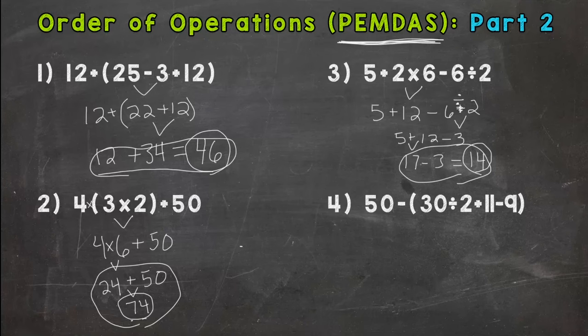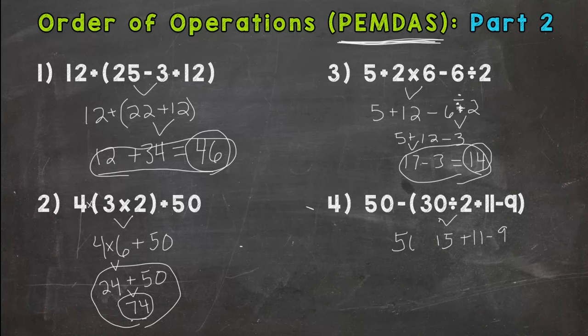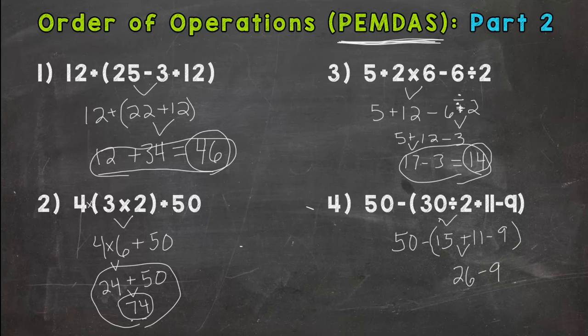Number four: any parentheses? Yes, and we have three operations within those parentheses — division, addition, subtraction. Division comes first: 30 divided by 2 is 15. Bring everything we did not use down, and since we haven't used all the operations inside the parentheses, we keep them. We have addition and subtraction — both level four, fourth priority — so we go left to right. 15 plus 11 is 26. Drop the minus 9; we haven't used everything in the parentheses yet, so keep them.